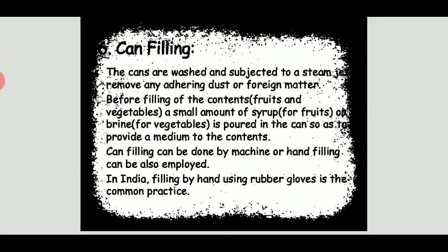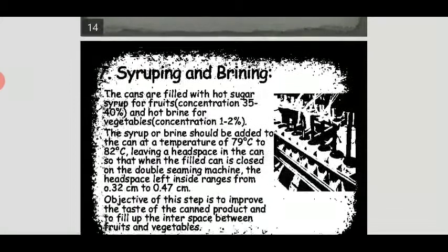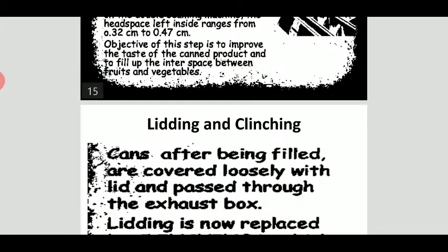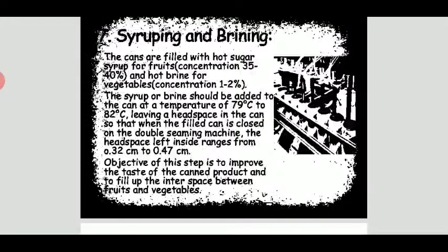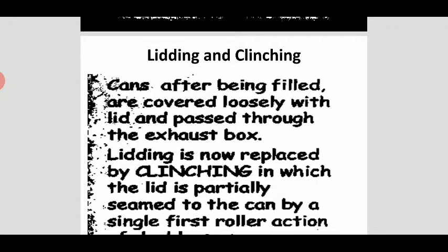For can filling, cans are washed and subjected to a steam jet to remove adhering dust or foreign matter. In syruping and brining, cans are filled with hot sugar syrup for fruits and hot brine for vegetables at a specific temperature ranging from 79°C to 82°C. A headspace of 0.32 cm to 0.47 cm must be left inside the can to prevent the contents from bursting out when opened.